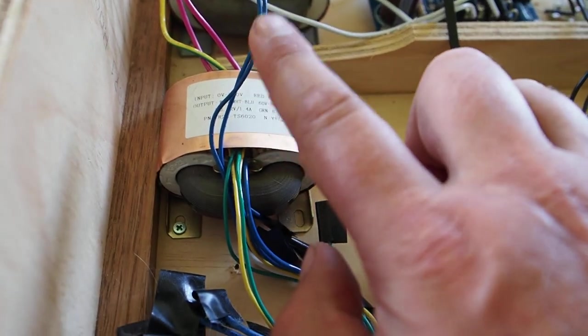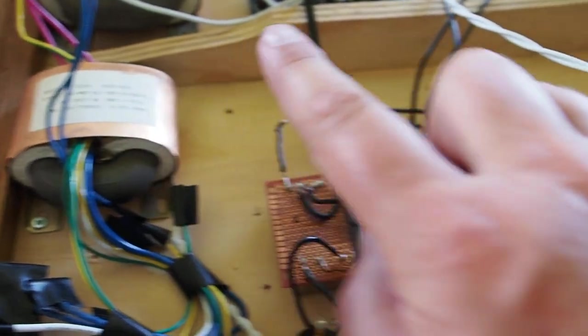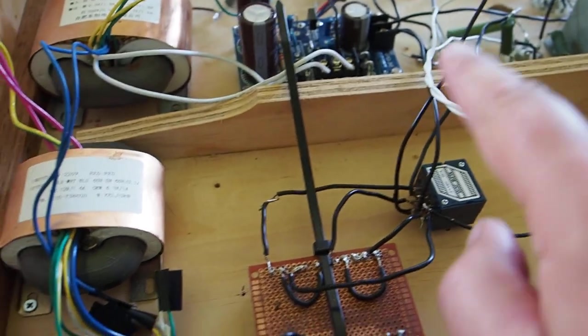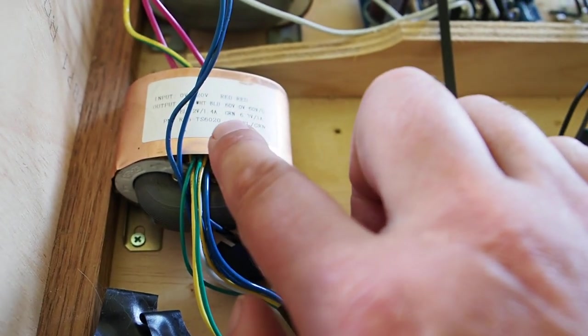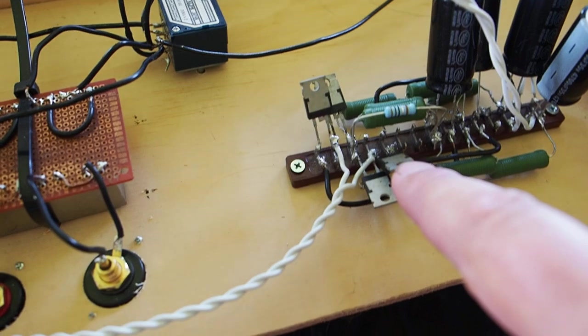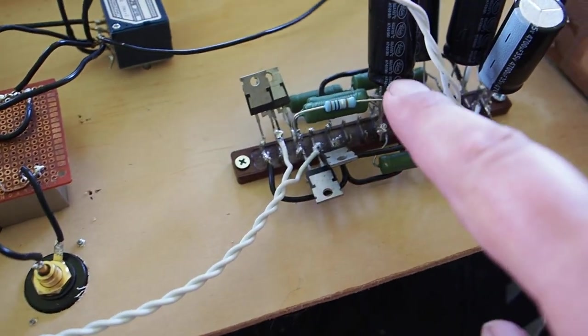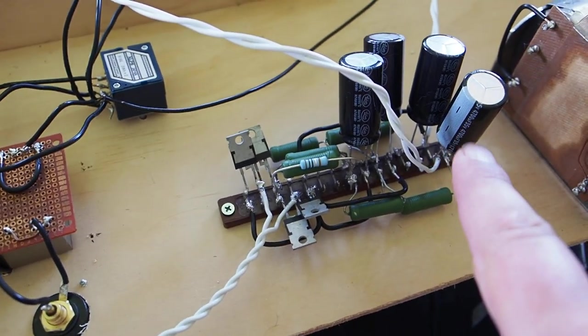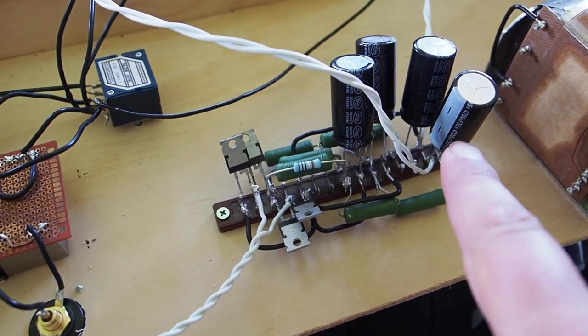So what is here? I've got here an R-Core transformer. It's only used to power the filament supply, so it's about 17 volts. I'm using a 12 volt and a 6.3 volt out on this transformer, and this goes through a Schottky diode and then a 3-stage which brings the ripple down to about 7-8 millivolts.